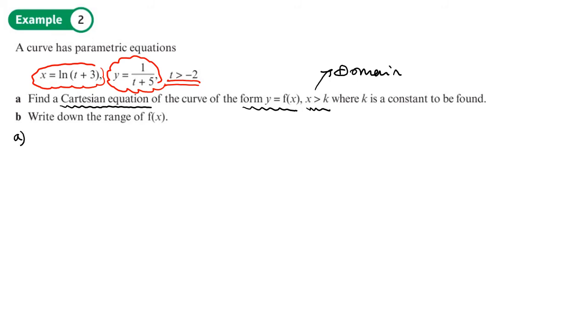So first thing we need to do is decide what we're going to make the subject. Are we going to make t the subject here, or t the subject here? Well, since we want to preserve y equals something, it makes sense to rearrange this in terms of t and put it in here. Then we've got y equals something in terms of x. If we made t the subject here and put it in here, then you'd have x equals something, and you'd probably have to rearrange it to make y the subject in this form. That just creates more work.